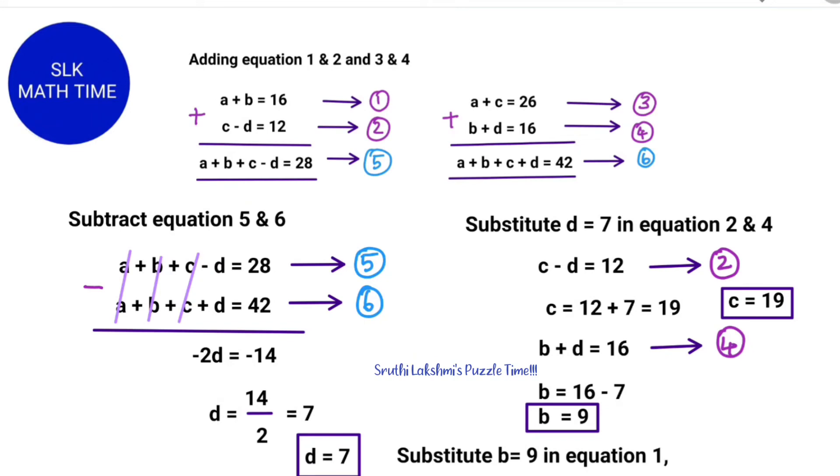So we have to substitute B which equals 9 in equation 1. Equation 1 is A plus B equals 16. So what we have to do is 16 minus 9 which is 7. So that means A is 7.